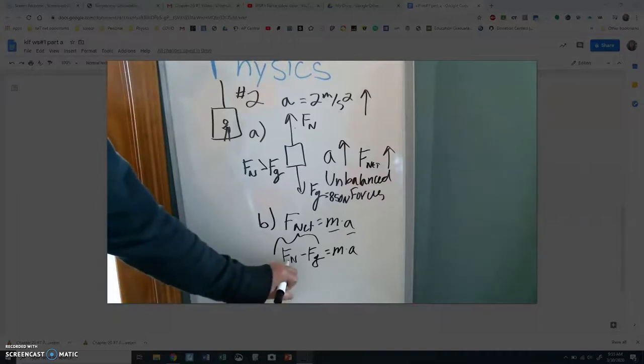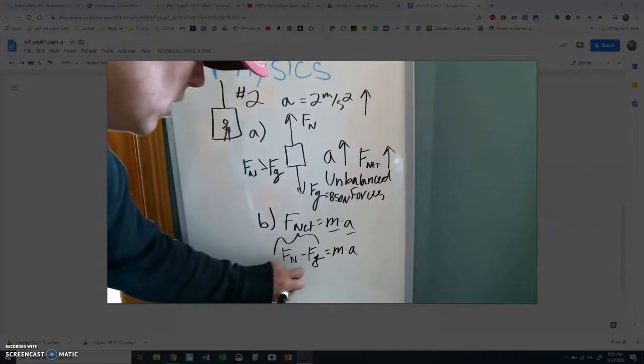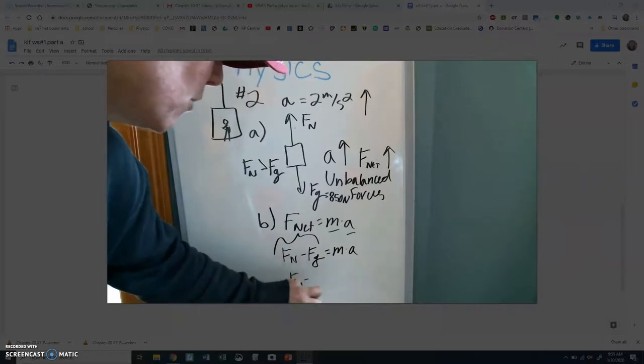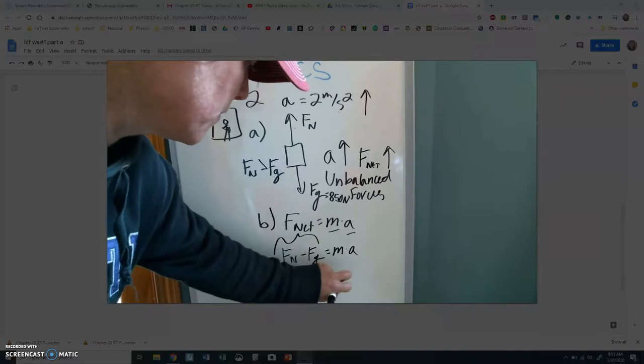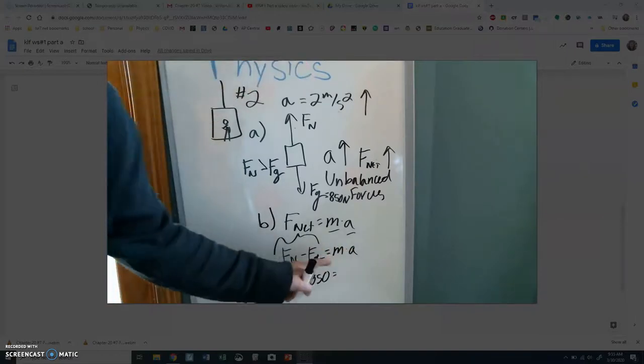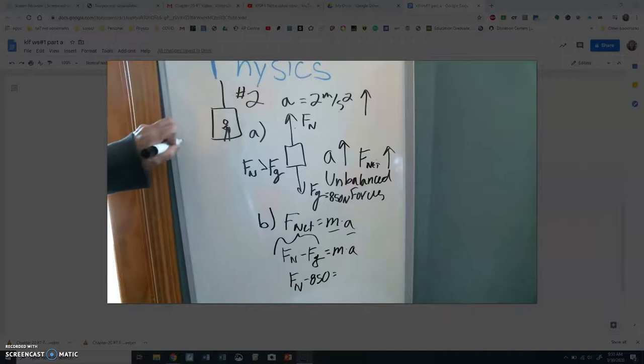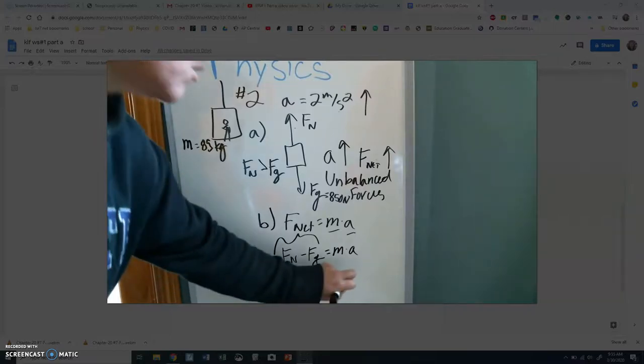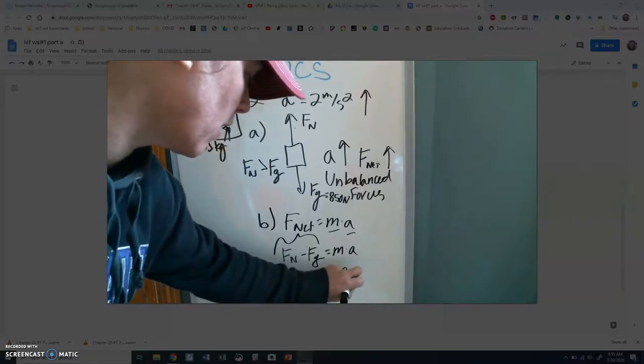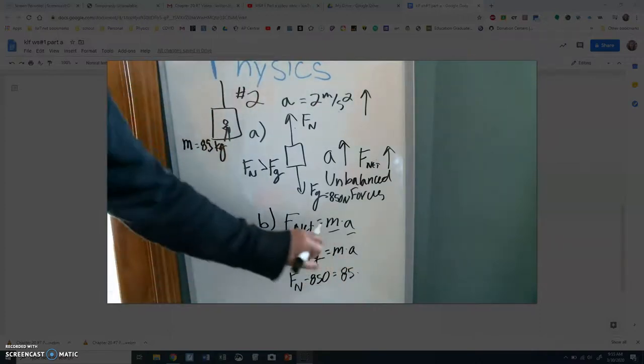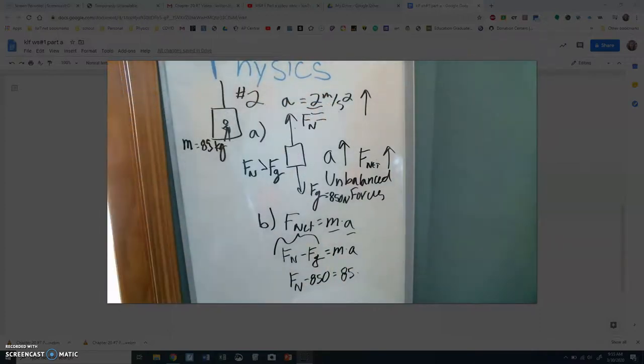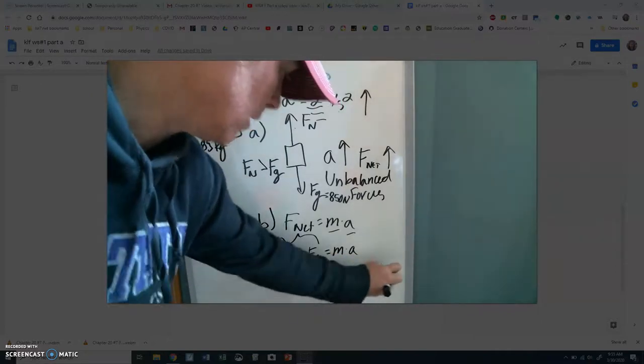Do we know force normal? Nope. I'm going to leave it. Do we know force of gravity? We do know that, 850. Do we know our mass? Yeah. Oh, wait. What is our mass? Mass, not our force. 85 kilograms. That is so messy. 85, not 850, 85. And our acceleration, they told us, 2 meters per second squared.